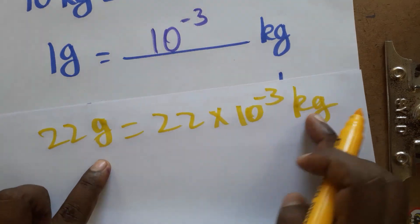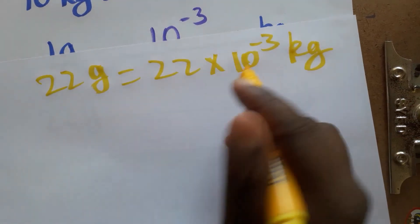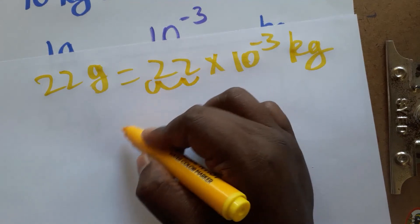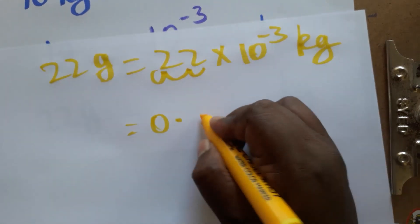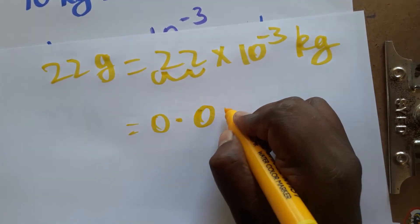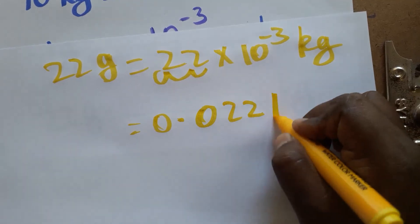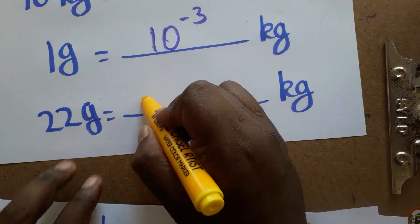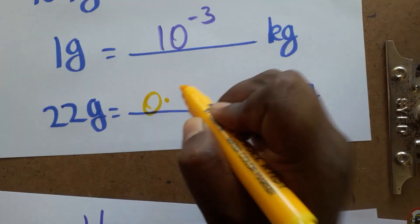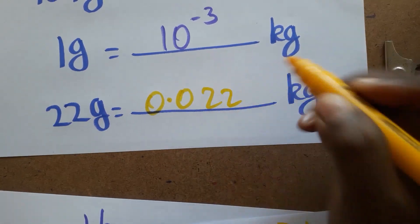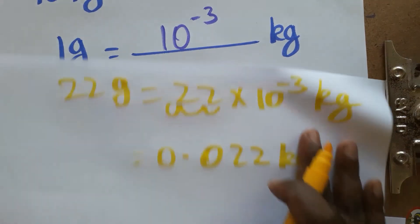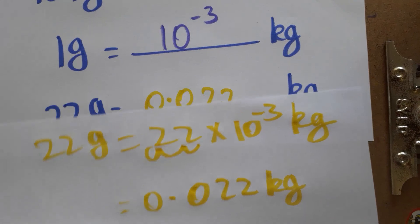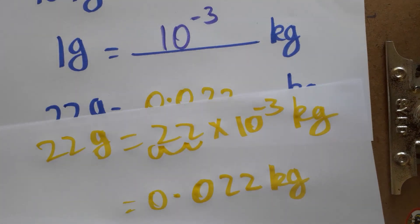For gram to kilogram conversion, we use 10 power minus 3, meaning we move the decimal three places: one, two, three. So 22 grams equals 0.022 kilograms. We can also write this as 22 into 10 power minus 3 kilograms. Thank you for watching — if you like my channel, please subscribe.